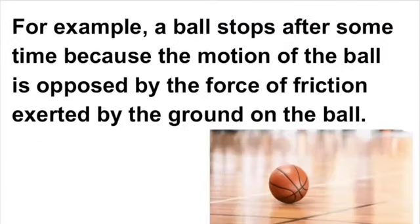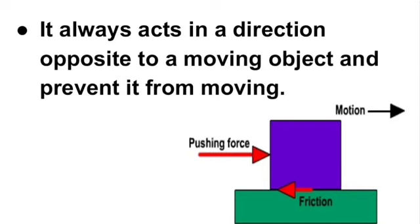Consider an example: a bowl stops after covering some distance. It stops because the motion of the bowl is opposed by the force of friction, which is exerted by the ground on the bowl as shown in the picture. One more important point: friction always acts in a direction opposite to a moving object and tends to stop it from moving.